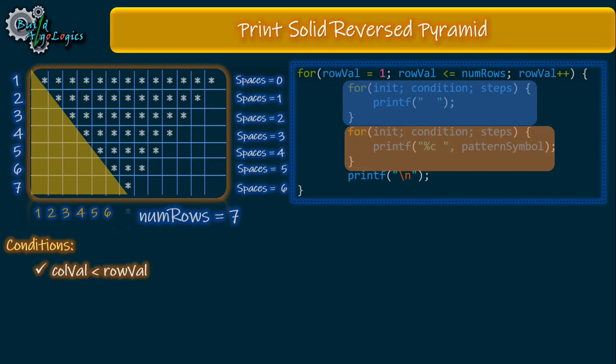Our first inner loop for printing white spaces will look something like this. If you're unfamiliar with the working of the for loop, you can watch my first video of this series in which I've explained how the for loop actually works. You can find the link of that video above in the i-card button or in the description.